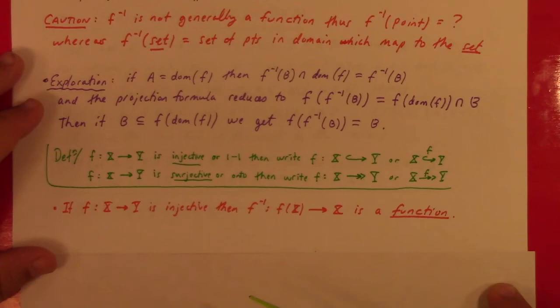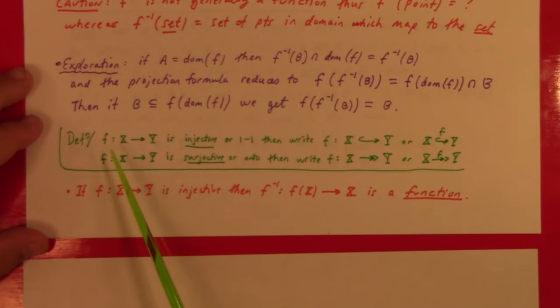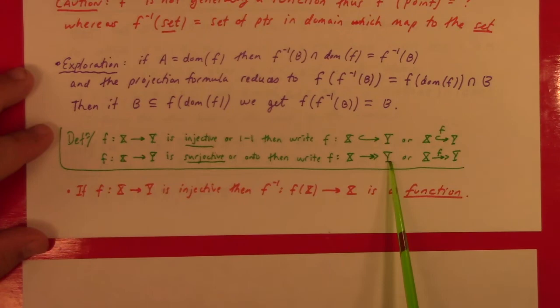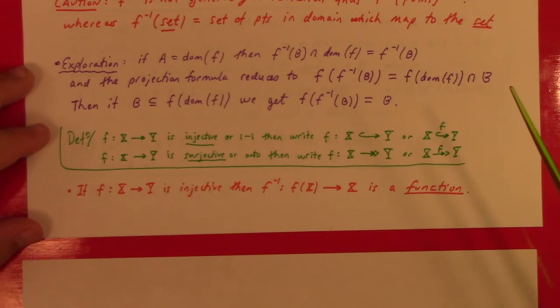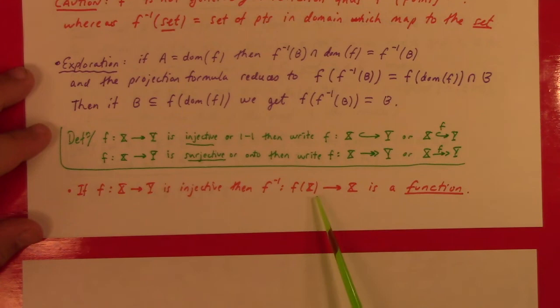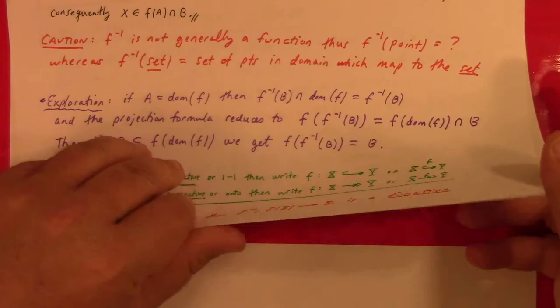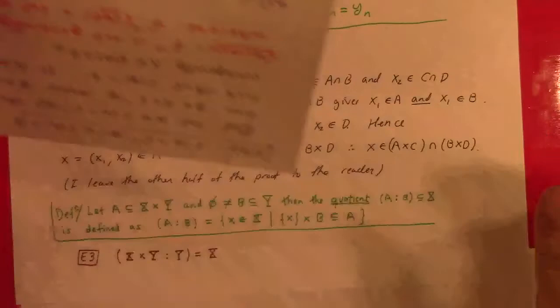Definition: F is injective or one-to-one — written with a hooked arrow; F is surjective or onto — written with a double-headed arrow. These are shorthands you'll see in the book. If F: X → Y is injective, then F⁻¹ from the image of X under F back to X is in fact a function. I'll define one-to-one and onto more fully in the next lecture.